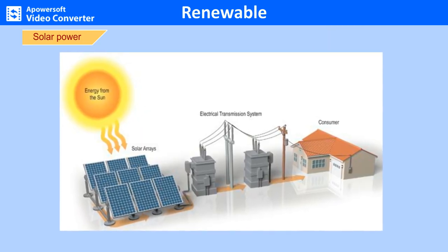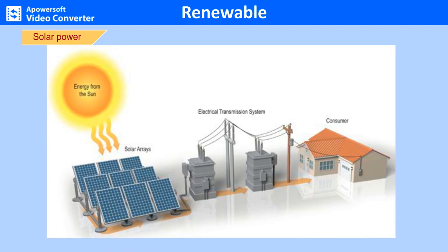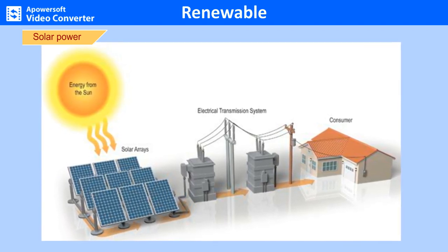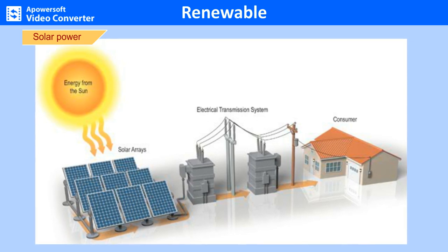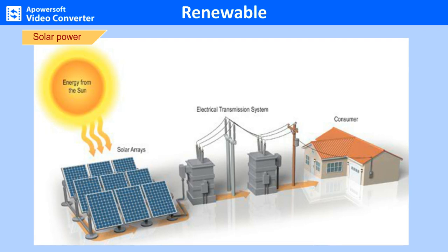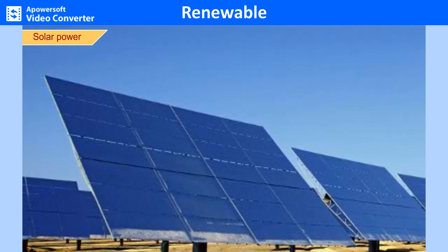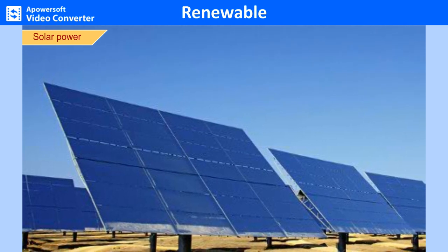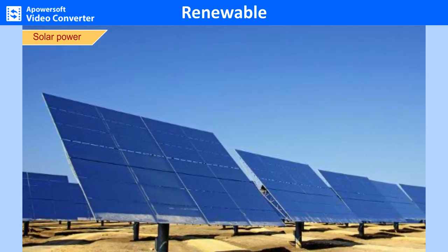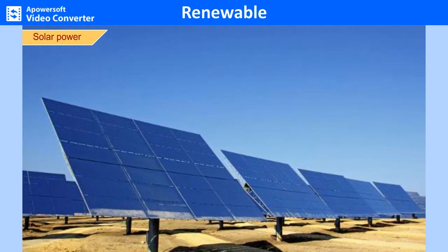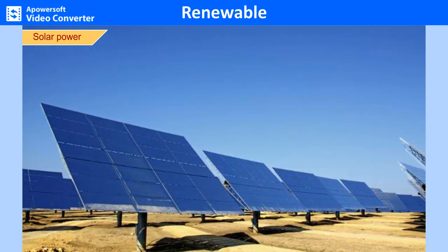Sunlight is the largest source of non-polluting renewable energy received on Earth. Solar energy can be directly converted into electricity by solar cells (photovoltaic cells). A single cell can only produce 2 watts, but many connected cells can produce thousands of kilowatts. However, this involves large investments and hence is not a very popular energy producing option. Solar energy is mostly used for low-powered items such as watches, calculators, cookers, water pumps, lanterns and water heaters. Though solar energy is free, the high costs of collection, conversion and storage restrict its use.